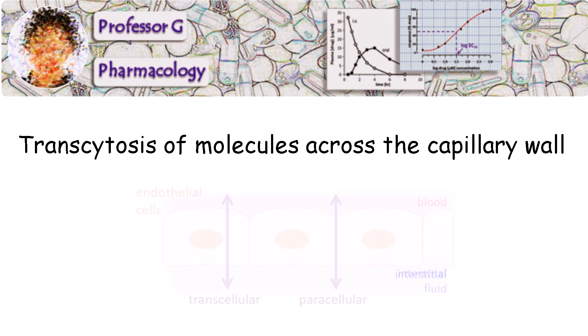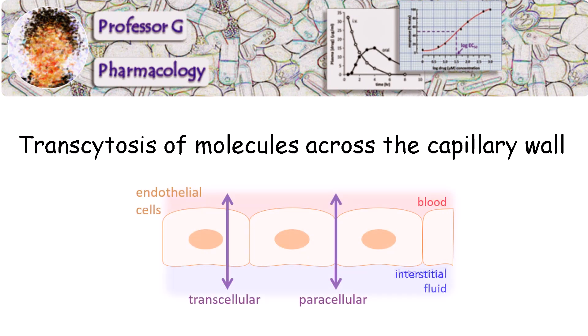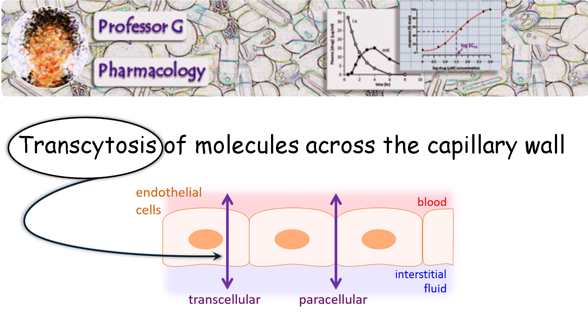Molecules can travel between cells or through cells, known respectively as the paracellular and transcellular routes. Transcytosis is a vital cellular process that allows macromolecules to move through cells from one side to the other. This is how nutrients, antibodies, and even some drugs bypass tightly regulated barriers like the blood-brain barrier or intestinal lining. Understanding transcytosis is key to unlocking advanced drug delivery systems, targeting diseases, and appreciating how our bodies manage complex transport logistics at the microscopic level.